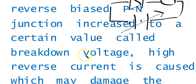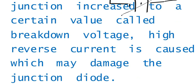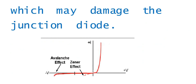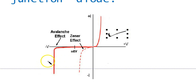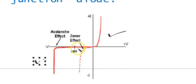A high reverse current is caused which may damage the junction diode. If the diode is an ordinary diode it may be damaged, but if it is a Zener diode then there is no problem. Along one side is the forward biasing forward V-A curve, and here is the V-A curve for the reverse biasing.